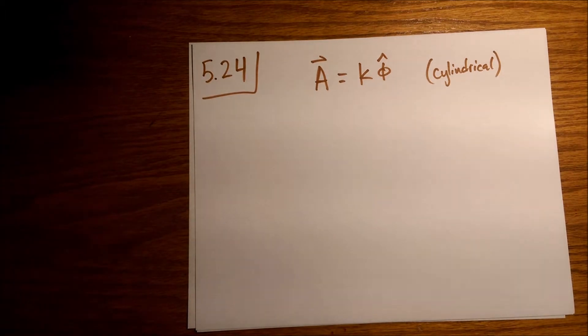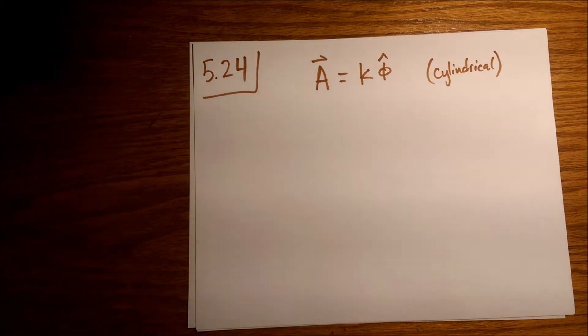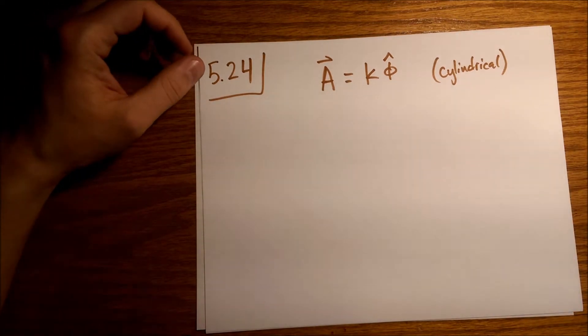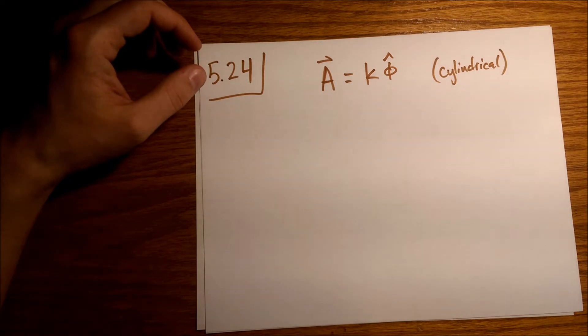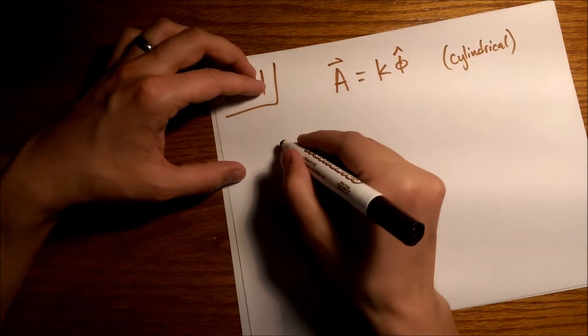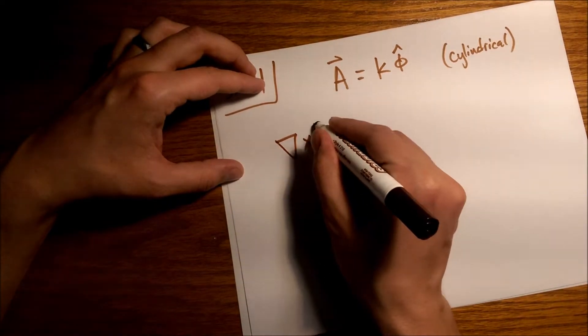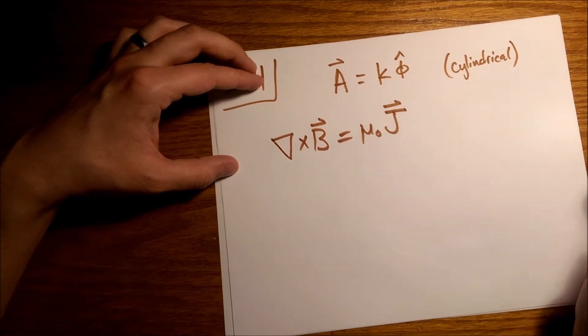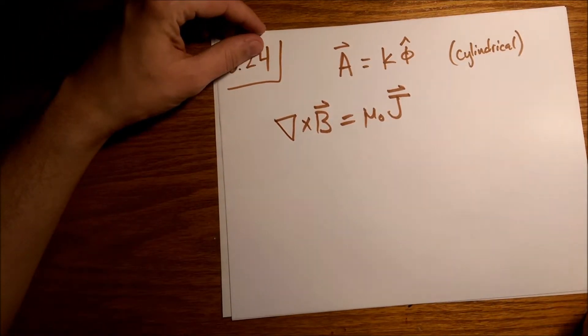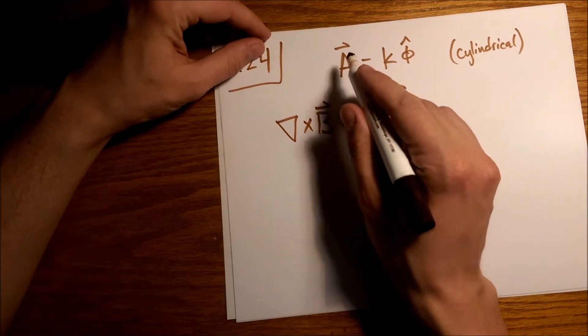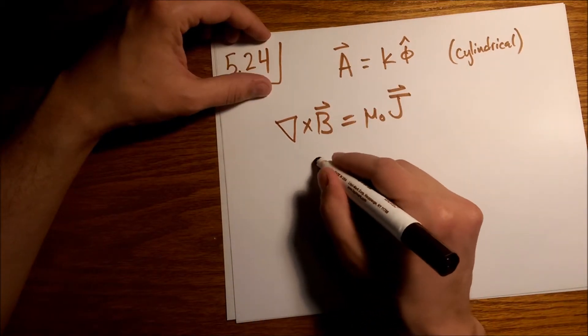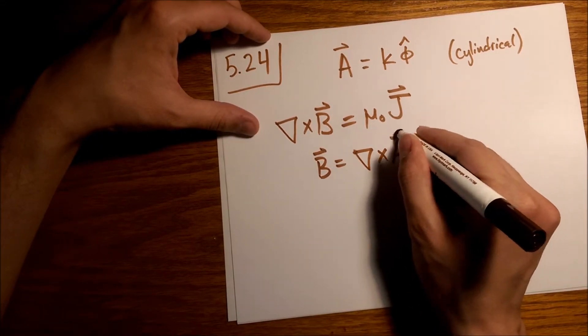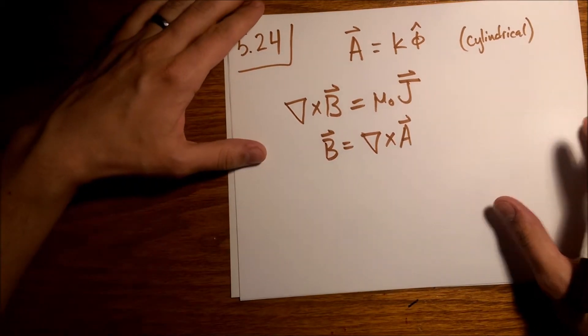So we have to be a little bit careful with this, like Griffith says. And so the way we're actually going to do this is we're going to use the equation del cross B equals mu not J. And we're going to use, in place of B here, the equation B equals del cross A, or the curl of A is equal to B.